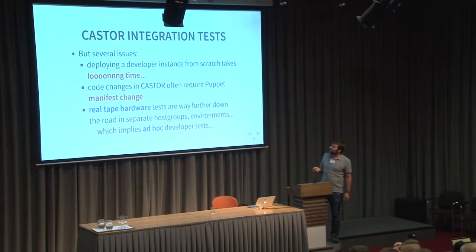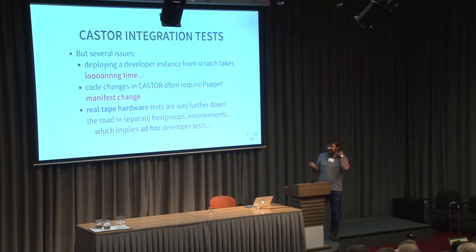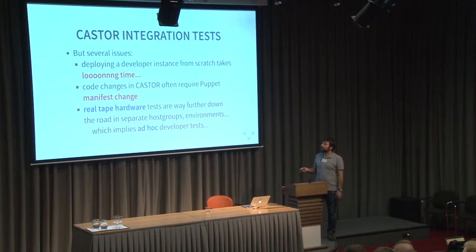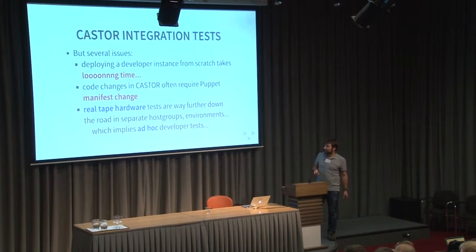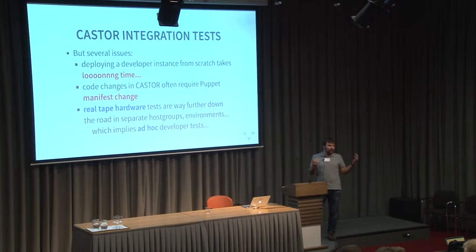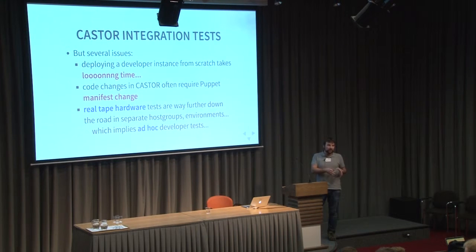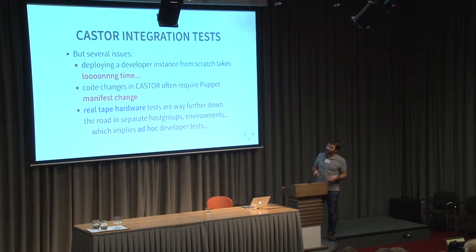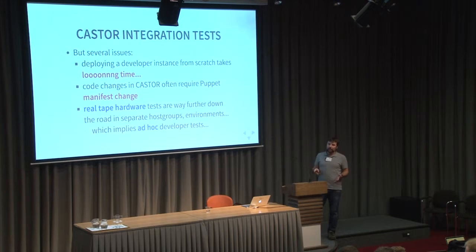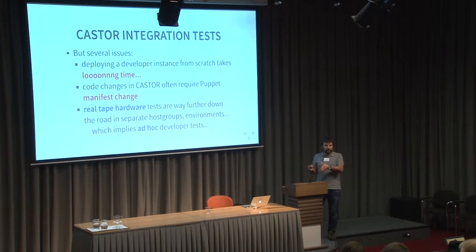But this approach has several issues. If you want to set up a new developer instance, it takes a long time because it's a full deployment of several virtual machines — it can take several minutes. When you change code in CASTOR, you may need to change the Puppet manifests, so you have two repositories that are diverging, and you have tests that are just not reproducible. The CASTOR repo is not enough to produce exact tests for a given commit. And what about real tape hardware? We sometimes need to develop features that must be tested on real hardware.